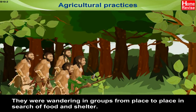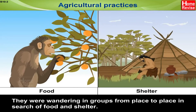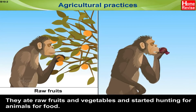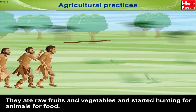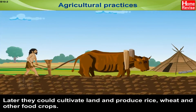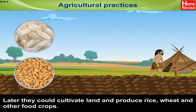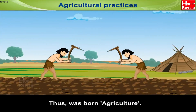Agricultural practices. Till 10,000 BC, people were nomadic — they wandered in groups from place to place in search of food and shelter. They ate whatever they could find, like raw fruits and vegetables, and started hunting animals for food. Later, they learned to cultivate land and produce rice, wheat, and all kinds of other food crops. Thus was born agriculture.